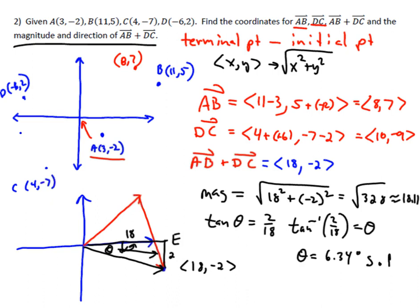It's south of what we call east, so it's 6.4 degrees south of east. Because we think about it - north, south, west, east - this angle is below the east, so it's south of it, and so we call it south of east. So the magnitude, 18.11, and the direction, 6.34 south of east.